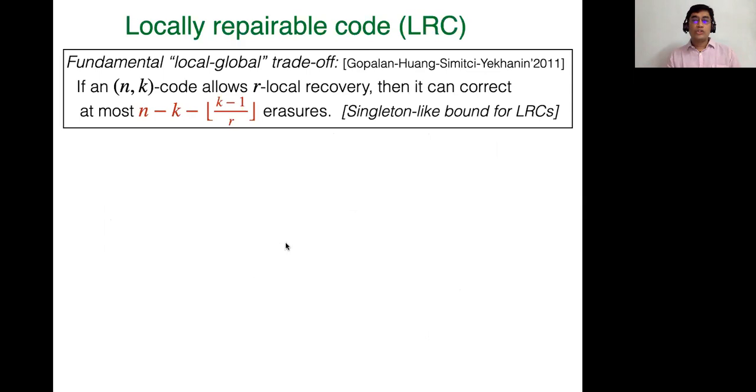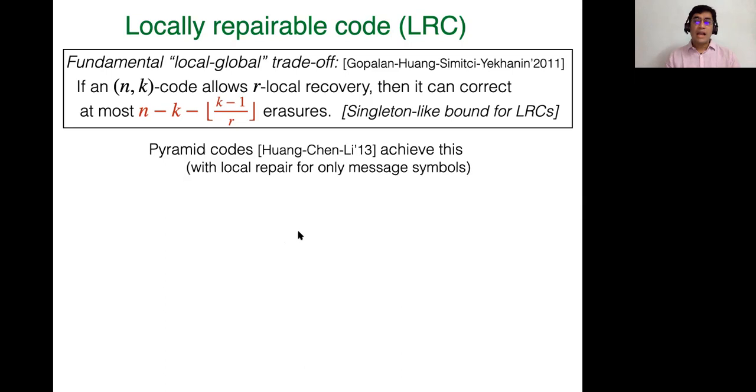So a fundamental bound by Gopalan and Huang, Shmit, Yekhanin in 2011 or so, which really sort of spurred a lot of work on these locally repairable codes abbreviated as LRC, said that if you want to have r local recovery, so recover a symbol using r other symbols, then you can't quite correct N minus K erasures. You have to back off from that bound by a quantity like K minus one by r. So as r is smaller and smaller, you have to back off from that bound. And this is very reminiscent of something called the singleton bound in coding theory. And this is the singleton bound for LRCs.